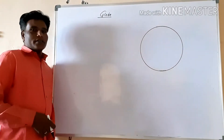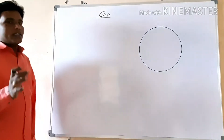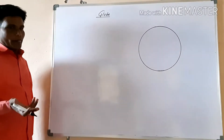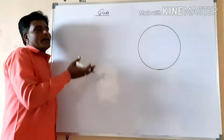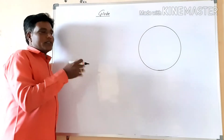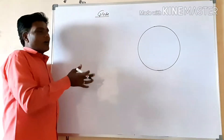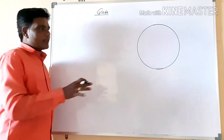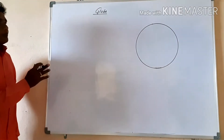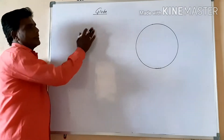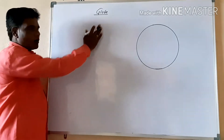Up to 5th standard we had only seen the globe. We only just knew what the globe is — that it is round in shape and has lines on it. Now in 6th standard, this lesson related to Geography, we are going to read more about the globe.